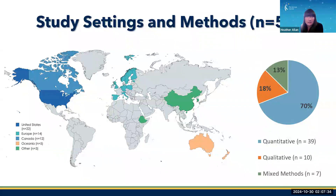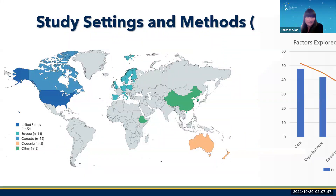So, what did we learn? The DME is being used to understand child welfare decision-making all over the world. Of the 56 studies that made it into the final sample, the majority were conducted in North America, with the rest coming from 15 different countries in Europe, Oceania, Asia, and Africa.